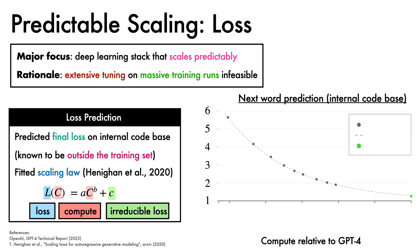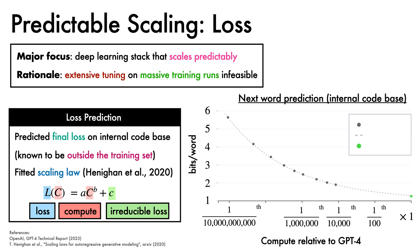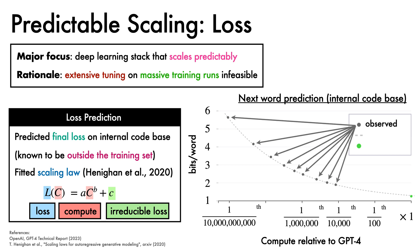Here are the results. On the x-axis, we plot the compute used by models relative to GPT-4, ranging from one ten-billionth of the compute on the left all the way up to the full GPT-4 compute budget on the right. On the y-axis, we plot the number of bits per word. The grey dots represent losses observed for low compute runs. By using models ranging from one ten-billionth up to one ten-thousandth of GPT-4's compute budget, the authors made a prediction, shown as the dashed line, which fairly accurately predicted the final loss of GPT-4, shown as the green dot in the bottom right.